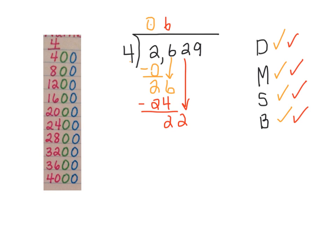Now we divide again. 22 divided by 4. I can get to 20, but I can't get to 24. So that would be 5. 5 times 4 is 20. Subtract. Bring down the 9.